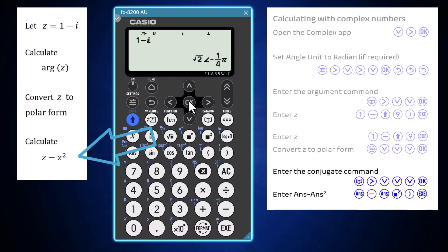To do a more involved calculation, like the conjugate of z minus z squared, it can be handy to have already entered z, as I have done at this point, and then it can be called up via the answer key as required.